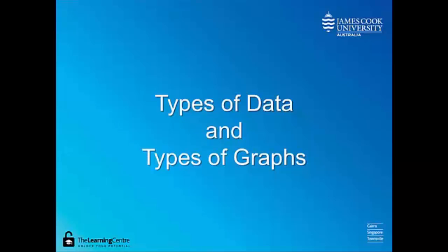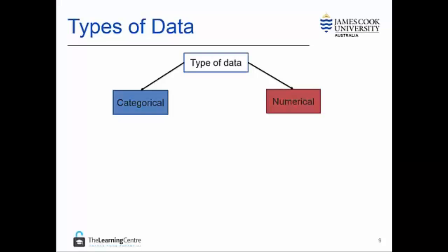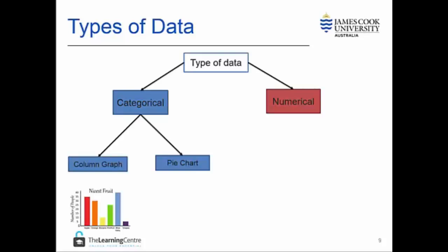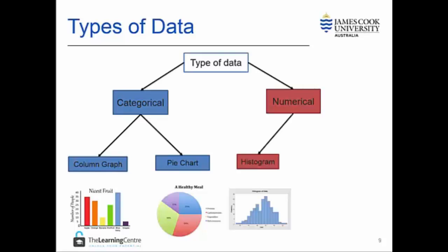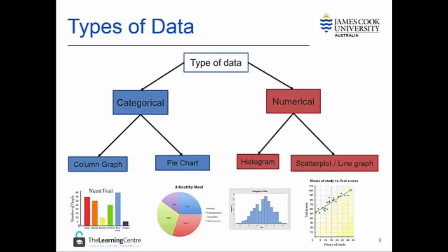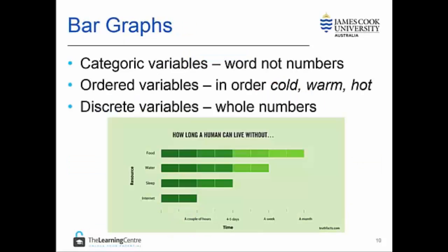Types of data and types of graphs. Different types of data are represented in different ways. Categorical data is represented using a column graph or a pie chart. Numerical data is represented using histograms or scatter plots and line graphs. Bar graphs are used for categoric, ordered and discrete variables.